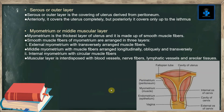The serous or outer layer is the covering of the uterus derived from the peritoneum. Anteriorly it covers the uterus completely, but posteriorly it covers only up to the isthmus.